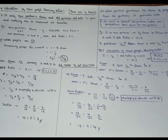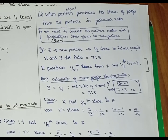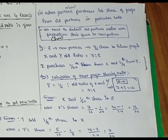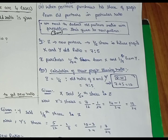Now we move to the second case: when the new partner acquires a share of profit from old partners in a particular ratio. Here we calculate the particular part of profit shared from X, Y, and Z. In case 2, we have already established values and will calculate the old partners' share of profit.